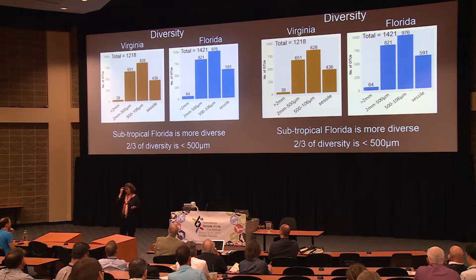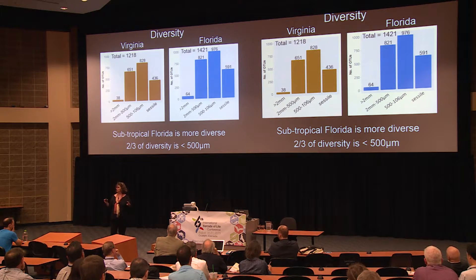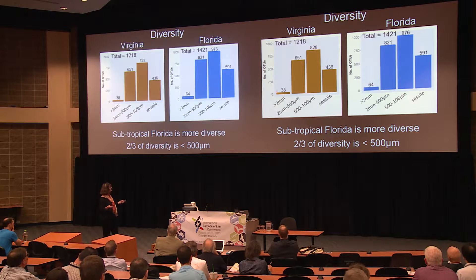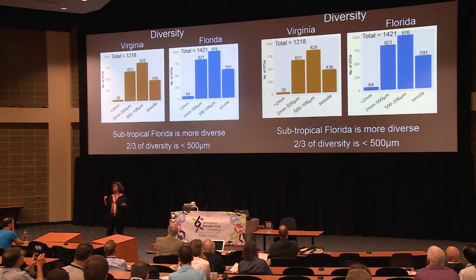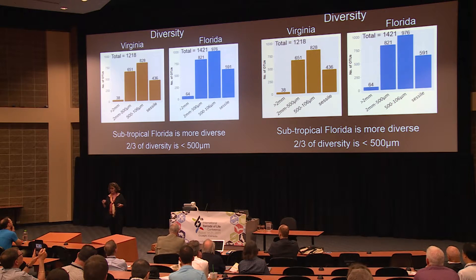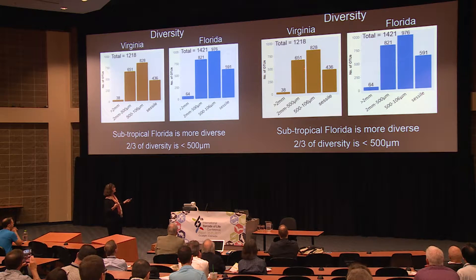Here are the diversity data plotted explicitly across different size classes. The larger stuff — greater than 2 millimeters, the crabs and shrimp and snails you think about when you think about marine diversity — is a tiny tiny fraction: 38 OTUs compared to 1,200 OTUs in total across both places. About two-thirds of all the diversity is found in the fraction less than 500 microns in size. Florida is more diverse than Virginia, but perhaps not as much more diverse as you'd expect, because smaller fractions don't have as steep a diversity gradient.